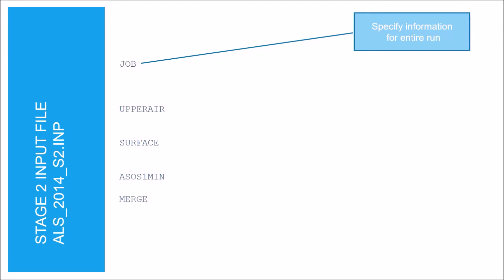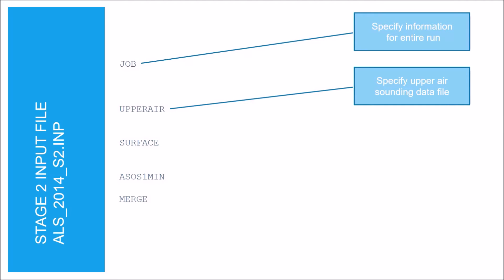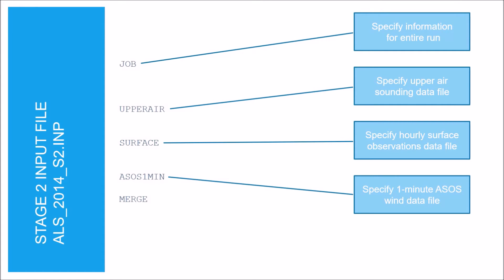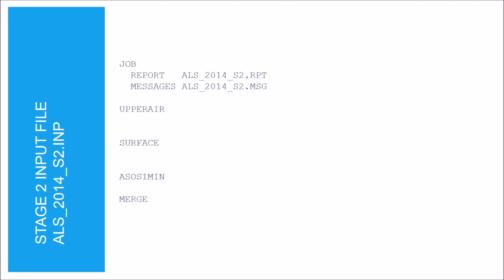The job section is where you specify the information used throughout the entire run. The upper air section is where you specify the upper air sounding data file. The surface section is where you specify the hourly surface observations data file, and the ASOS 1-min section is where you specify the 1-minute ASOS wind data file. The merge section is where you specify the output file information. The report keyword specifies the file name for summary information, and the messages keyword specifies the file name for all error, warning, and informational messages.